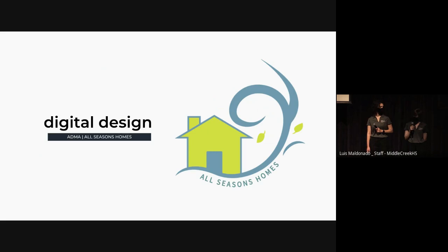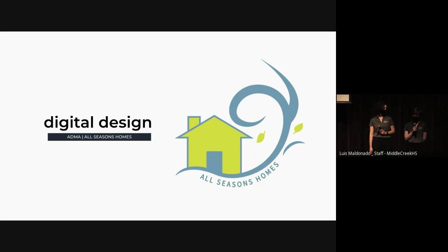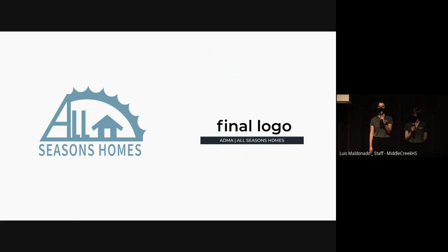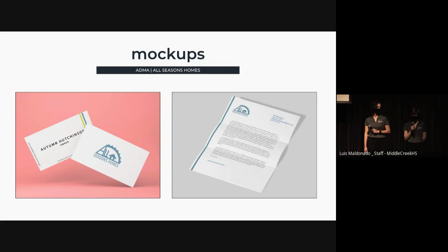Out of my three thumbnails, I chose my second one. I thought it captured the image of All Seasons Homes the best. The house is representative of real estate, and the wind and leaves alludes to the changing of seasons. Communication was key throughout our work when creating the logo for All Seasons Homes. We spent a lot of time discussing a variety of ideas, designs, and colors amongst each other. In the end, our client chose the logo because it fit the company's image and ideals the best. The logo is timeless, easy to understand, and clearly represents what All Seasons Homes provides as a company. With the final logo decided, we created two mock-ups consisting of a business card and a letterhead to show how the logo could be utilized in a professional setting.